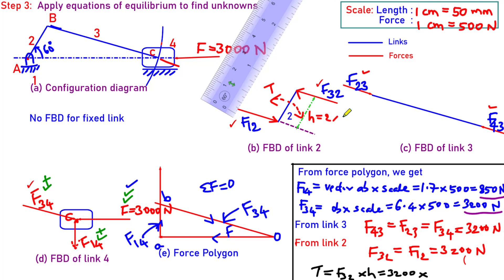It comes around 2 centimeters for me. So 2 multiplied by scale, this comes around 100 mm for me. So I will get 0.1. The answer will be 320 Newton meter.